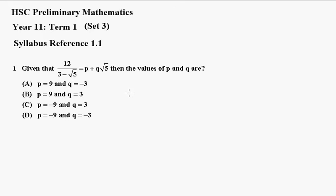So I'll write this down as 12 over 3 minus root 5, multiplying top and bottom by the conjugate, which is 3 plus root 5 over 3 plus root 5.